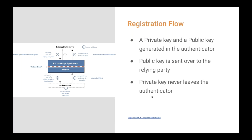In the registration flow, when the user begins the registration process, the relying party sends out a challenge. The user agent — the browser — responds by using the WebAuthn API to prompt the user's authenticator to create a new key pair. A relying-party-specific credential key pair — the private key and public key — is generated in the authenticator. The private key is used to sign the challenge generated by the relying party. The user agent then sends the public key, a credential ID, and the signed challenge over to the relying party. The private key never leaves the authenticator.